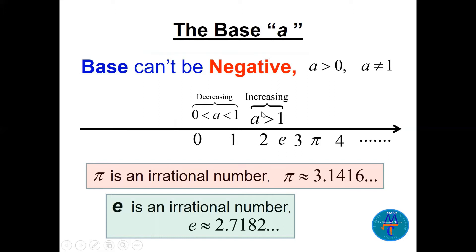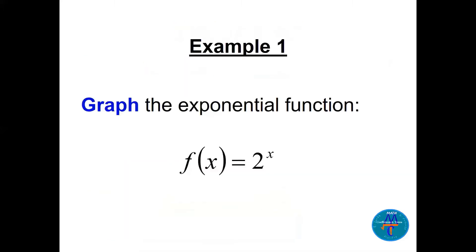The function is increasing if the base a is greater than one, and decreasing if a is between zero and one. Just to mention, pi is an irrational number approximately 3.1416, and there is another important irrational number e, approximately 2.7182.